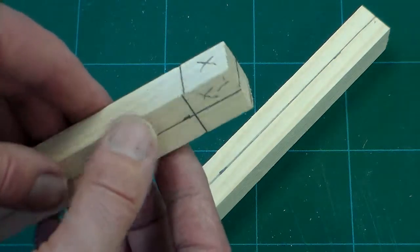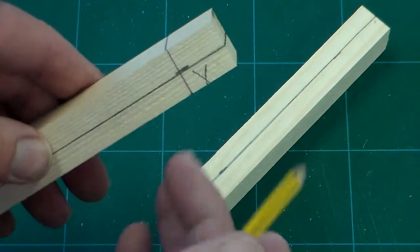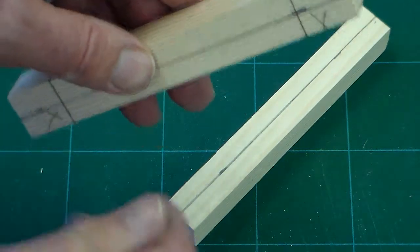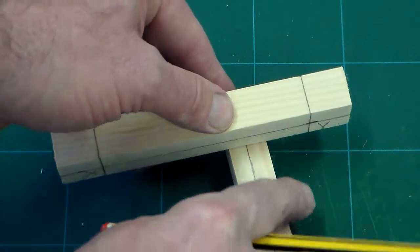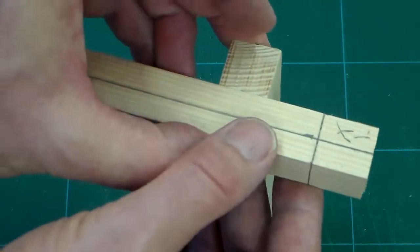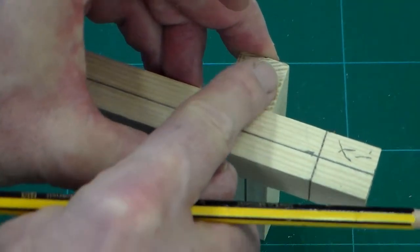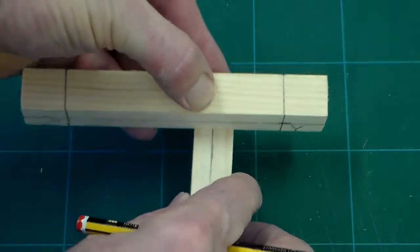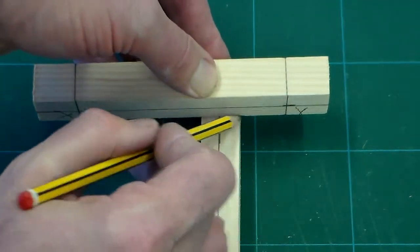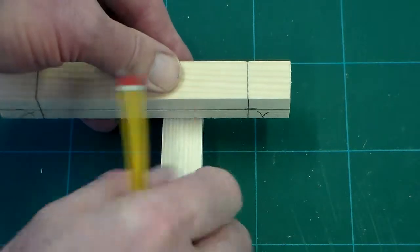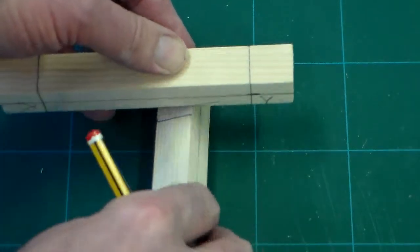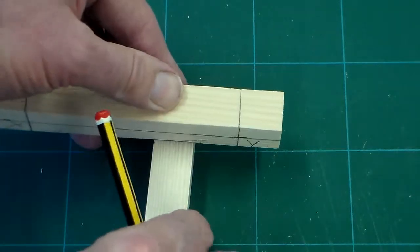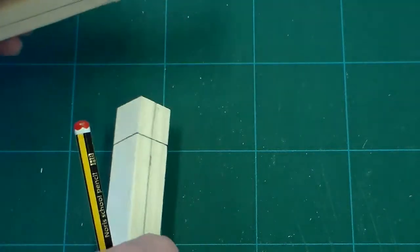The next thing we need to do is mark all the way around for the depth of our rebate joint. We can do this by taking a second piece of wood, holding it so that the ends are flush. Flush means this surface and this surface are absolutely level. We then turn it round and make a mark. We rotate the wood 90 degrees at a time until we've marked each face.